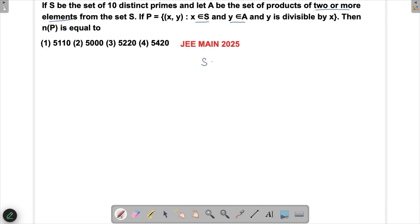Let's write the elements of S. The 10 distinct primes could be something like 2, 3, 5, 7, and so on. Now if I'm looking at A, the set of two products, it could be like 2 × 3, or it could be 2 × 3 × 5. So I can take either two elements or more than two.